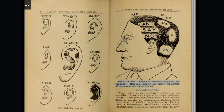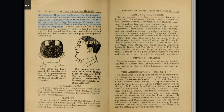Here is a complete and pointed explanation of the reason one cannot say no. Impulsiveness. What makes people impulsive? Intellect is not impulsive — there is no impulse in a single intellectual faculty. There is no impulse in firmness or self-esteem. There is impulse in cautiousness, destructiveness, benevolence, friendship, approbativeness, parental love, combativeness, amativeness, alimentiveness, inhabitiveness, veneration, acquisitiveness, ideality, mirthfulness, hope, and sublimity. To be impulsive, then, is to let one or more of these elements act without regulation. Impulses start in these faculties. If they are much stronger than self-esteem, firmness, conscientiousness, human nature, and causality in anyone, he will be impulsive.